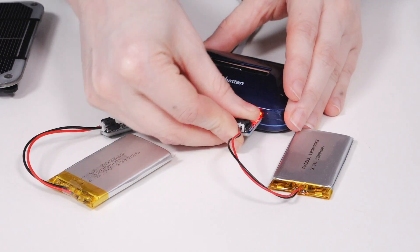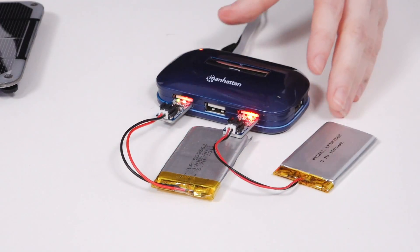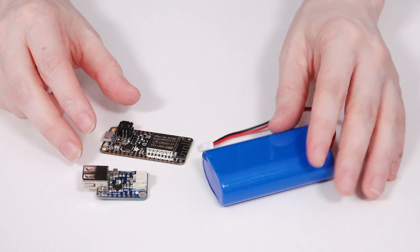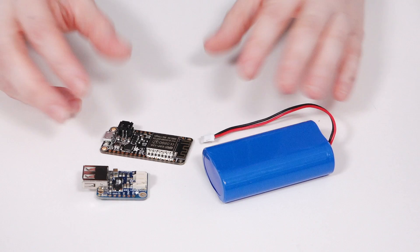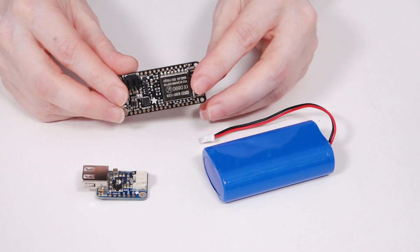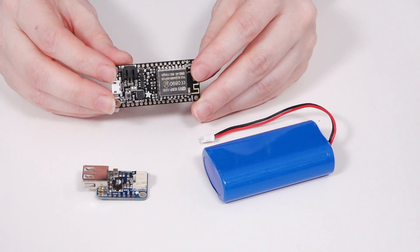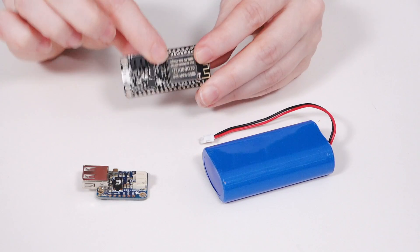When powering your project with lithium ion or polymer batteries, you have two ways of going about it. You can use a 3.3 volt low dropout regulator if your device is 3.3 volt logic and power, like this Feather Huzzah.